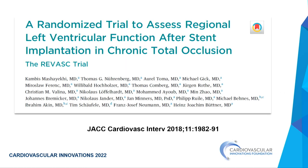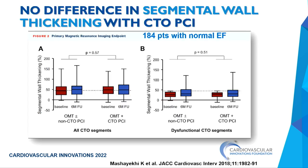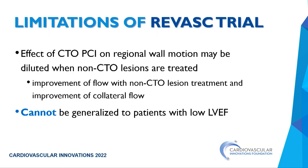There was a randomized trial by Mashayekhi where the objective was to find if CTO PCI would improve regional wall motion contraction. It did not — no difference whether you did non-CTO PCI only versus adding CTO PCI in 184 patients with normal EF. The limitation is that the effect of CTO PCI on regional motion is likely diluted when doing non-CTO patients, because collateral flow improves. It cannot be generalized to patients with low EF.